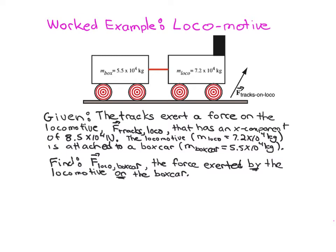We're given the train — the locomotive and the boxcar — are resting on some train tracks, and the tracks are exerting a force on the locomotive, on the drive wheel of the locomotive in particular. We'll call that force F sub tracks comma loco — the force exerted by the tracks on the locomotive — and we're told the X component of that force has a value of plus 8.5 times 10 to the fourth Newtons. We also know in this problem the mass of the locomotive and the mass of the boxcar, and we're asked to find the force that the locomotive exerts on the boxcar.